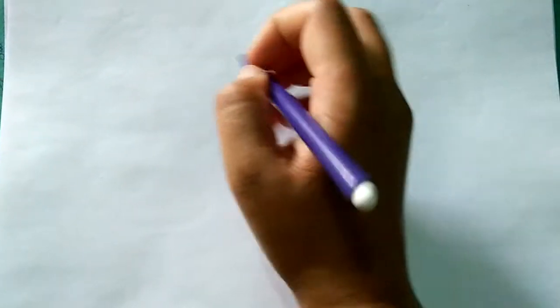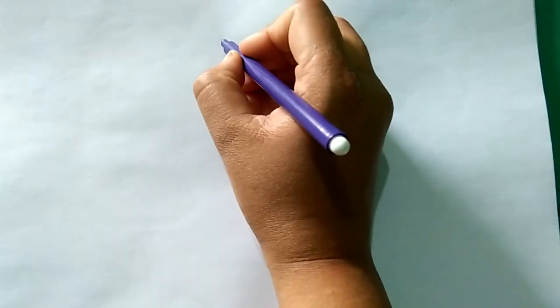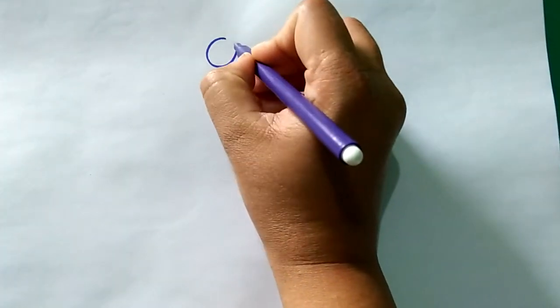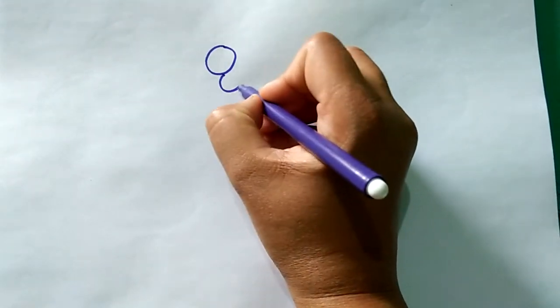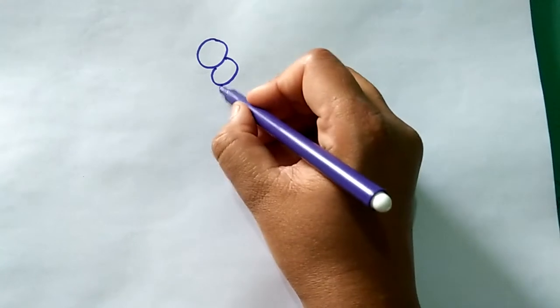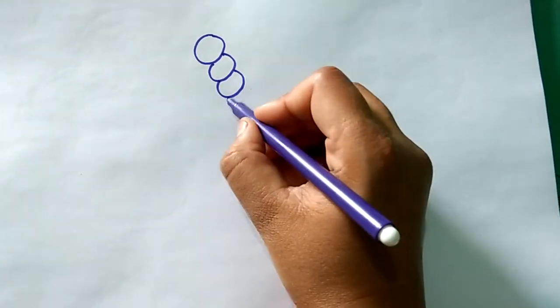Good morning class, today we are making a butterfly, so let's start. First, we draw a circle like this. Okay, now we add half of the circle like this.